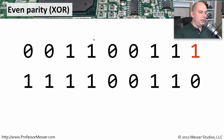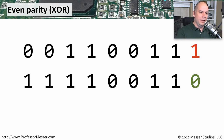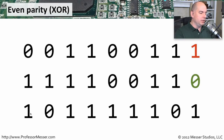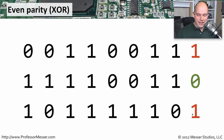Another example: byte 1-1-1-1-0-0-1-1 with a zero parity bit at the end. Count the ones: one, two, three, four, five, six — six is even, so the zero parity bit is absolutely correct and the data is valid. One last example: byte 1-0-1-1-1-1-0 with a one parity bit at the end — count the ones: one, two, three, four, five, six, seven. Seven is odd, so parity doesn't match and I'll have to ask whoever sent this data to resend it.